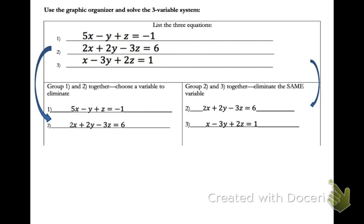So the first thing that you always do is you list your 3 equations. So if you've got a homework problem pulled up, make sure you write your 3 equations up here in the top box. Next, the graphic organizer tells me to group equations 1 and 2 together. So see how I've copied those down. And I'm going to choose a variable to eliminate.